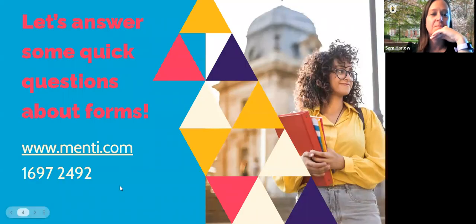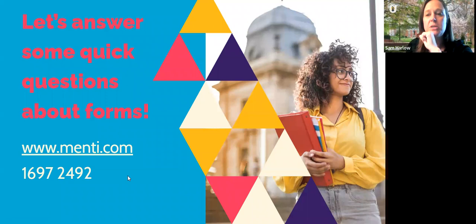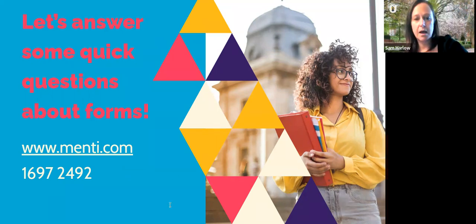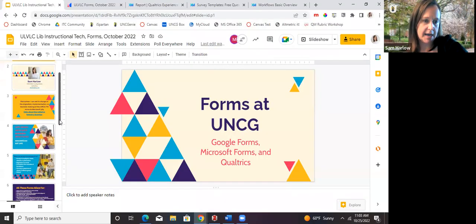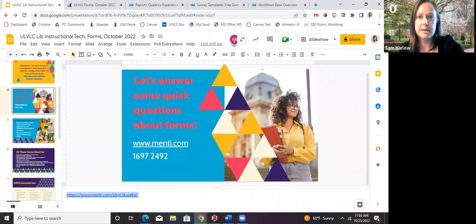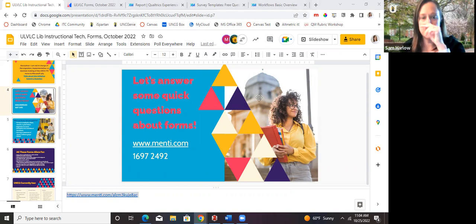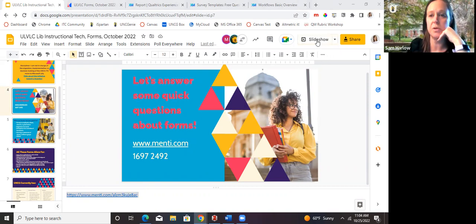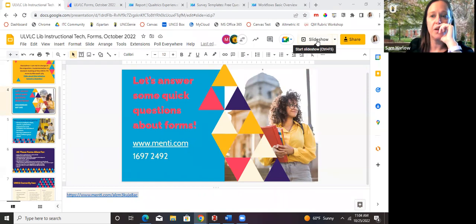To get started, we're going to do a quick Mentimeter. Here's the information if you want to do it on your phone: www.menti.com, code 1697-2492. I'm also dropping the direct link into the chat. It's just two quick questions to get an idea of what you all want to learn today, and if you have any specific questions I'll try to showcase it or figure it out with you.